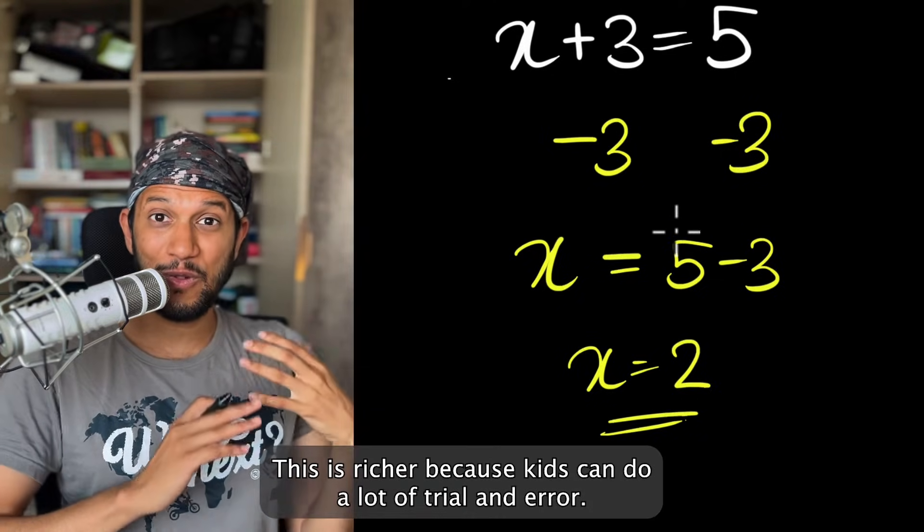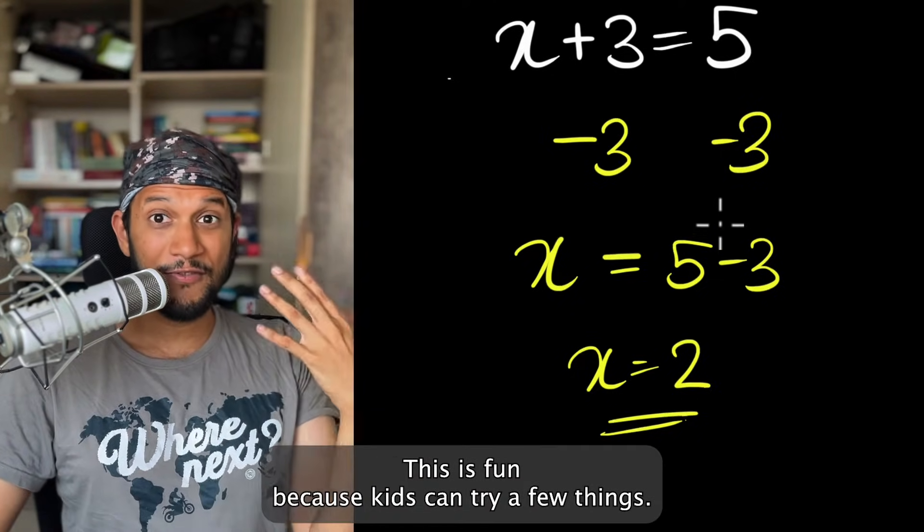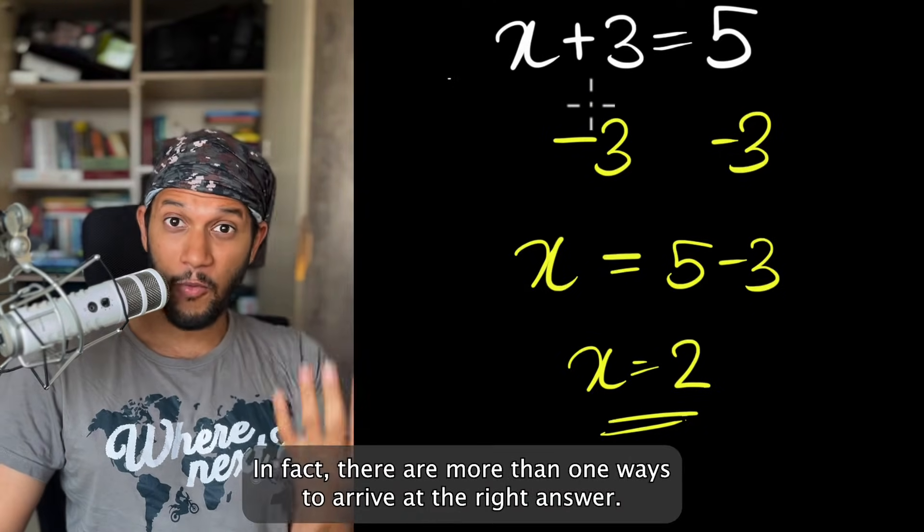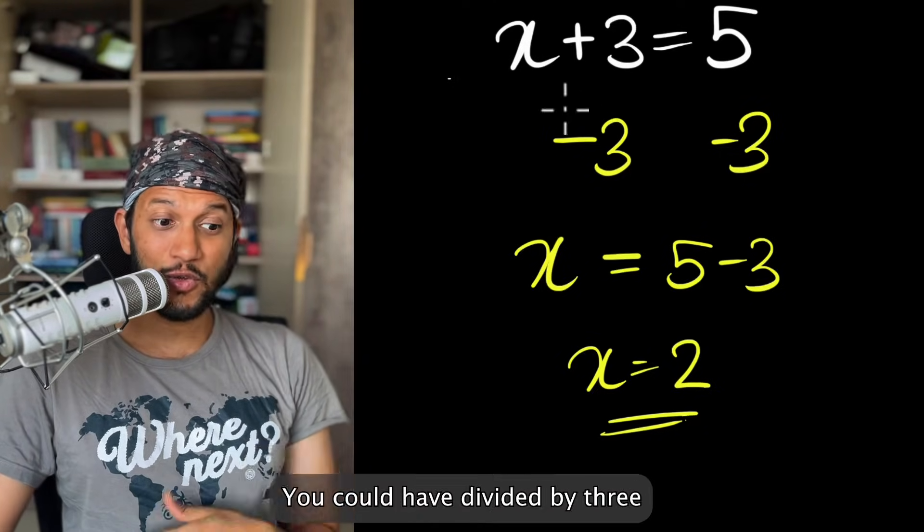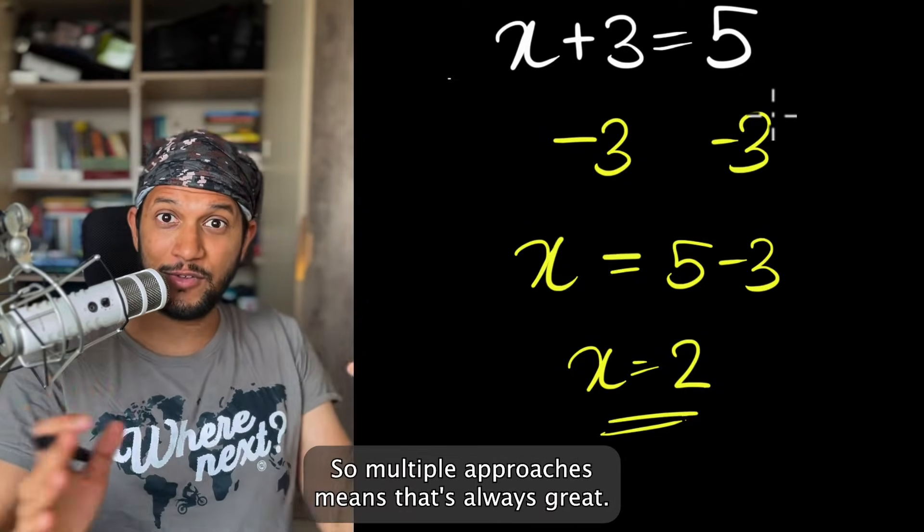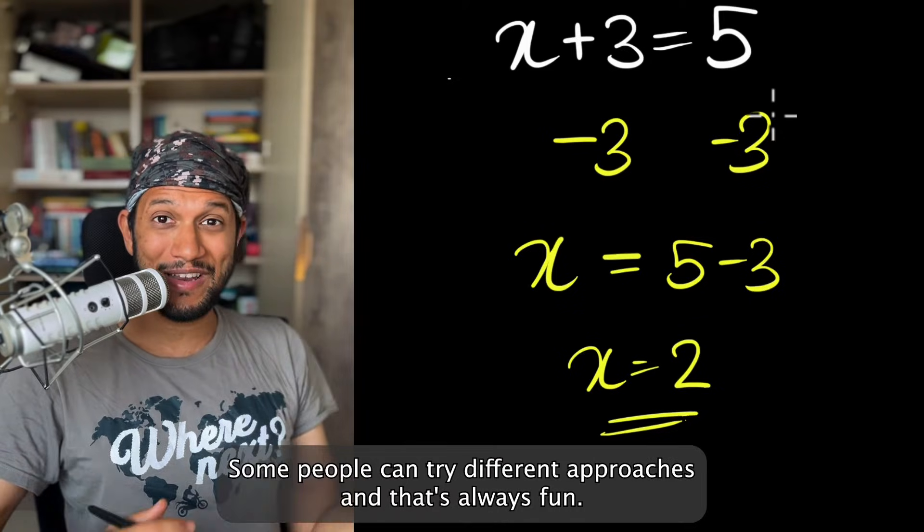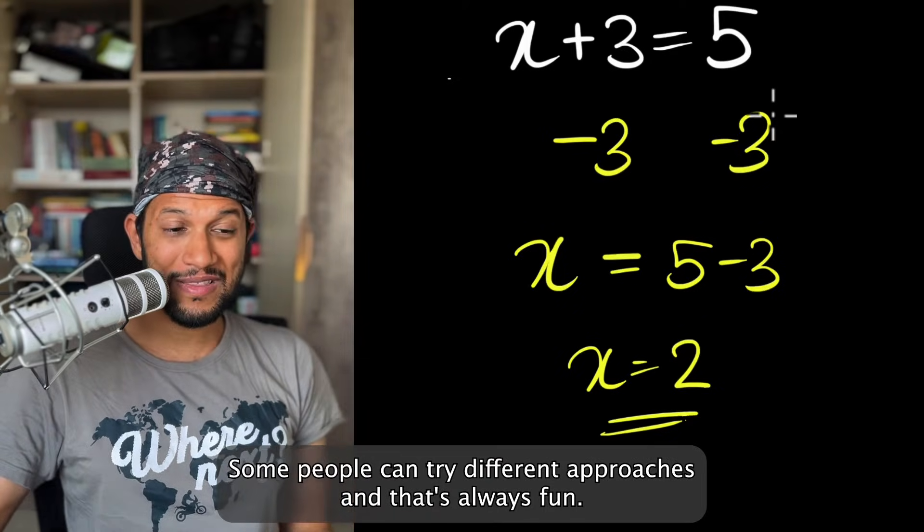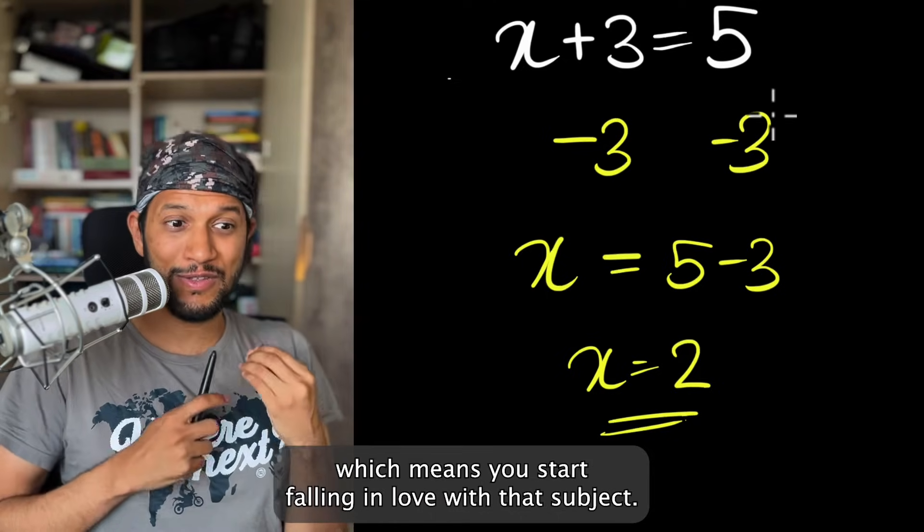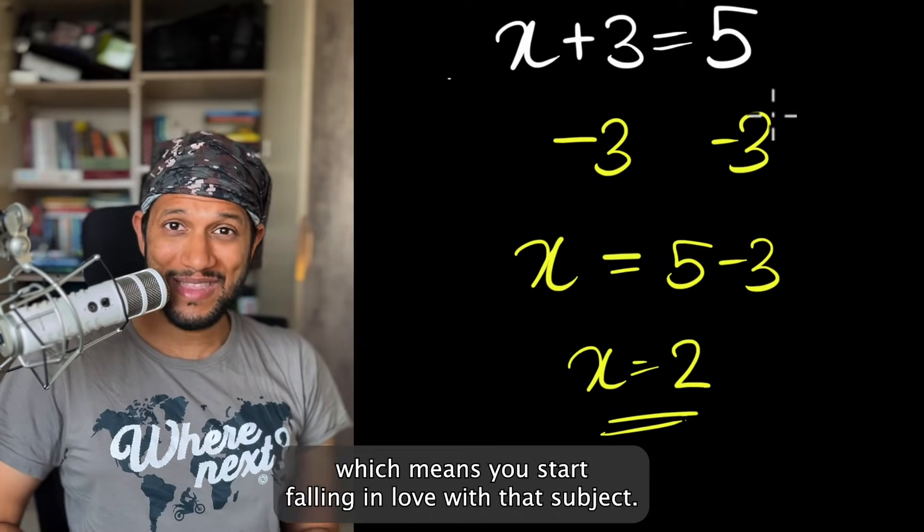This is richer because kids can do a lot of trial and error. This is fun because kids can try a few things. In fact, there are more than one ways to arrive at the right answer. You could have divided by three and you could have still arrived at the right answer. So multiple approaches means that's always great. Some people can try different approaches and that's always fun. You don't have to rote memorize anything over here, which means you will start falling in love with that subject.